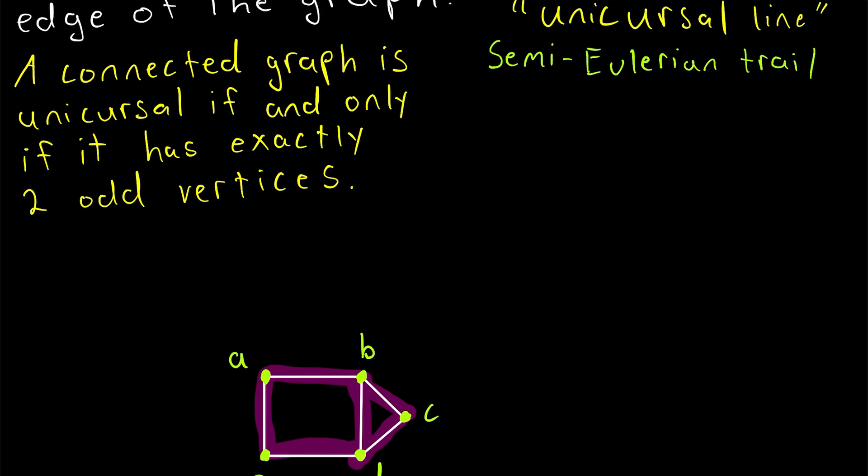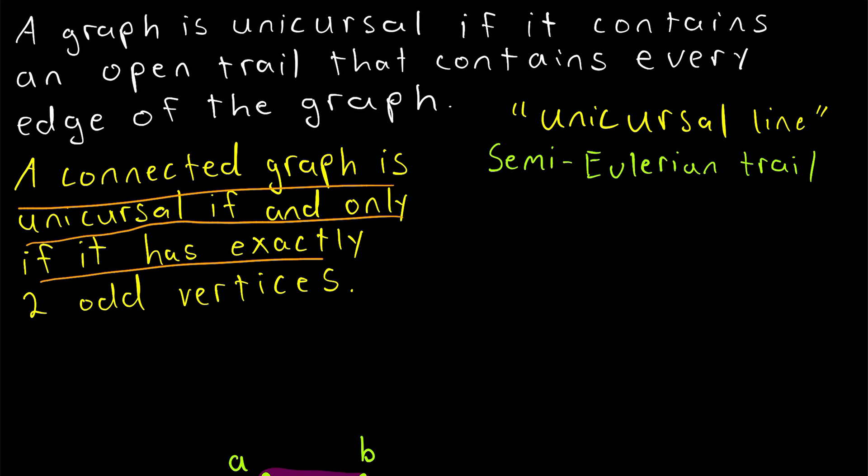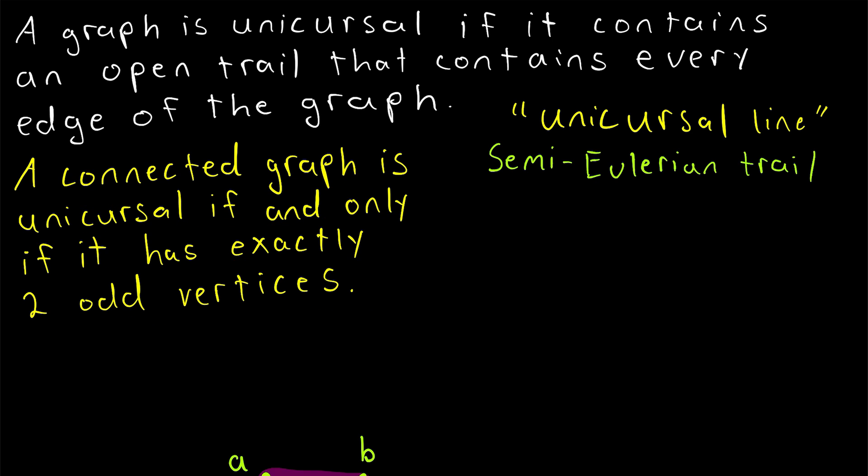So that's just a quick illustration of the proof. And that's what unicursal graphs and lines are. A graph is unicursal if it contains an open trail that contains every edge of the graph, and a connected graph will be unicursal if and only if it has exactly two odd vertices. Let me know in the comments if you have any questions, need anything clarified, or have any other video requests. Thank you very much for watching — I'll see you next time, and be sure to subscribe for the swankiest math lessons on the internet.